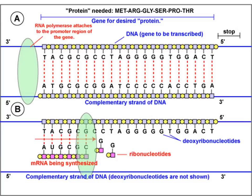Here's the schematic: RNA polymerase attaches to the three prime end of the DNA, because RNA is synthesized in the five prime to three prime direction. RNA polymerase makes a complementary nucleotide sequence of messenger RNA based on that antisense strand of DNA. For example, given the sequence TACGCG, across from T you get A, across from A you get U (because we don't have thymine in RNA), across from C you get G, across from G you get C, and so on.